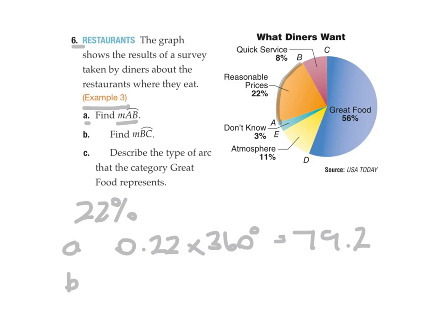What's B? Same thing. BC is this part here. Well, that's 8 percent. So that's going to be 0.08 times 360 degrees. And this time that's 28.8.